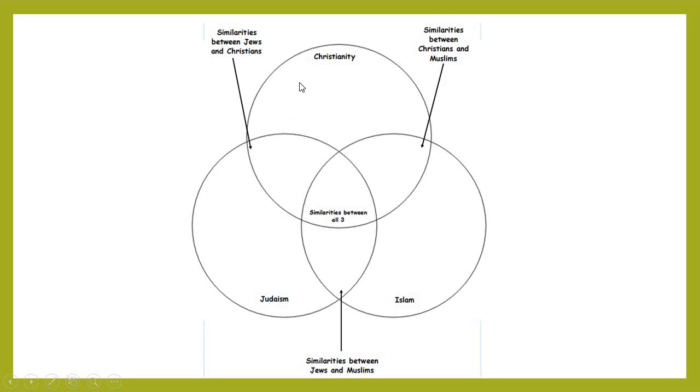In this area, where Christianity and Judaism overlap, that's where you would bullet point anything that is the same between the Jews and the Christians. In this area where Christianity and Islam overlap, this is where you would bullet point anything that is the same between Christians and Muslims. In this area that overlaps between Judaism and Islam, this is where you would bullet point similarities between Jews and Muslims.